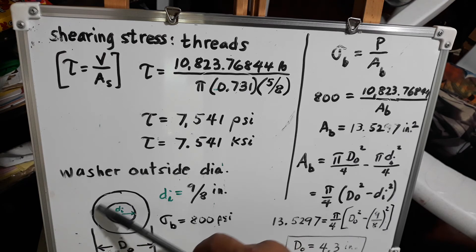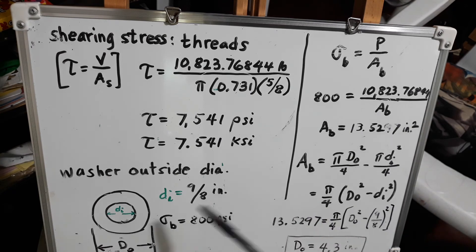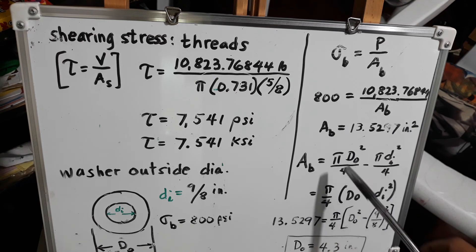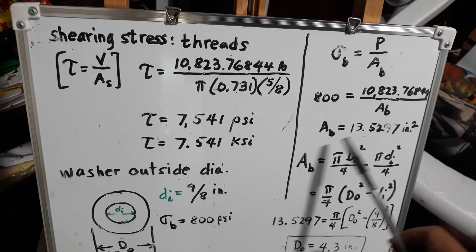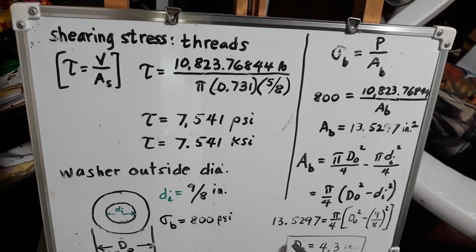The bearing area of the washer is 13.5297 square inches, which equals the area of the larger circle minus the area of the smaller circle: pi D_o squared over 4 minus pi D_i squared over 4. Factoring out pi over 4 gives D_o squared minus D_i squared inside parentheses. Substituting 13.5297 for the bearing area and 9/8 inch for D_i, and solving for the outer diameter D_o gives 4.3 inches.